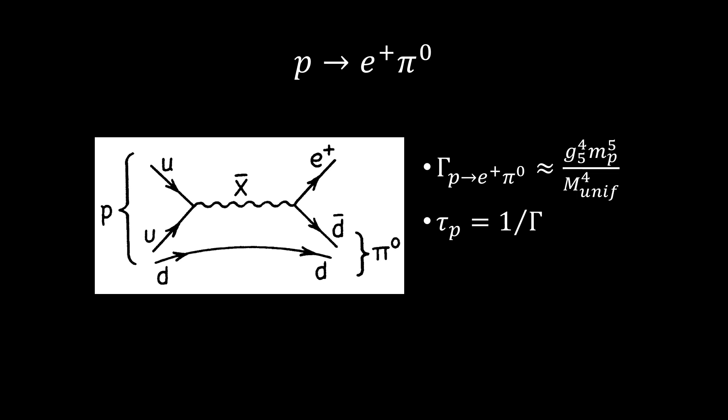Our usual technique to estimate the width is not expected to apply here, because hadronic binding effects are involved. Since we expect m_X to be large, and presumably of the order of the grand unification scale, we only need a very crude answer.